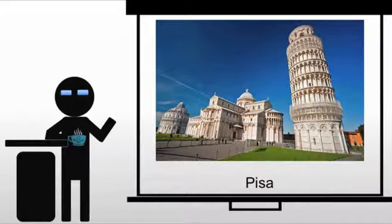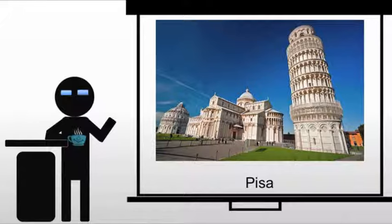Where we're going to start is Pisa, which was a prosperous maritime city, and built their cathedral based on the spoils of naval victory over the Muslims. This is a rare example of all three structures in a similar style. In Italy, oftentimes we will see the cathedral, and then the bell tower will be a separate structure, and the baptistry will also be separate.